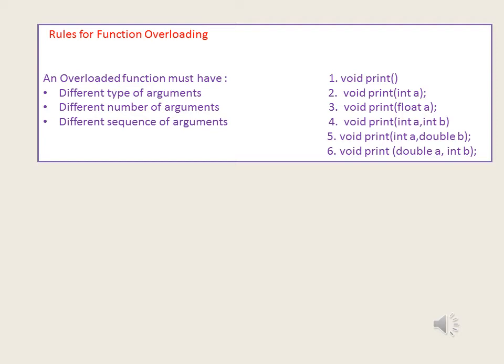We have six different cases of overloaded functions. In case one, we have void print() with no arguments. In case two, we again have print as the function name — same name — but here we are passing an integer value as an argument. In case three, we are passing one argument but of a different type, that is float type. This satisfies the first condition: different type of arguments. Cases two and three are examples of overloaded functions with different types of arguments, while cases one and two illustrate different numbers of arguments.